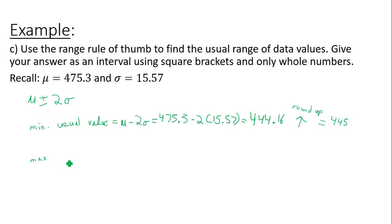What about the maximum usual value? Maximum usual value is mu plus two times sigma. That is 475.3 plus two times 15.57, which is 506.44.